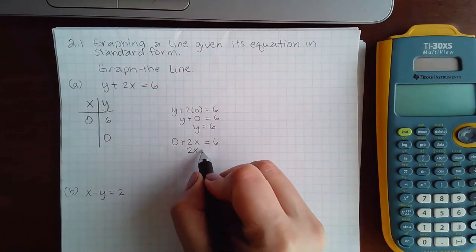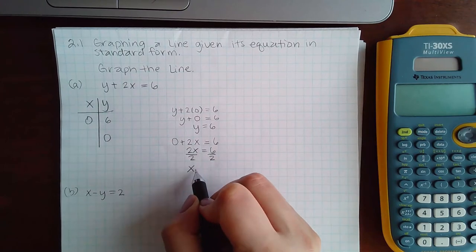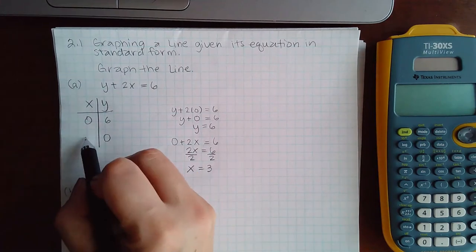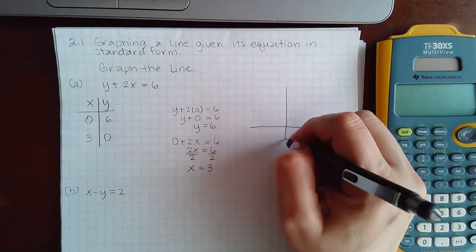So that's the same as saying positive 2x equal to 6 and if I divide by 2 on both sides we find that x equals 3. And so then in order for you to graph it you would get the...